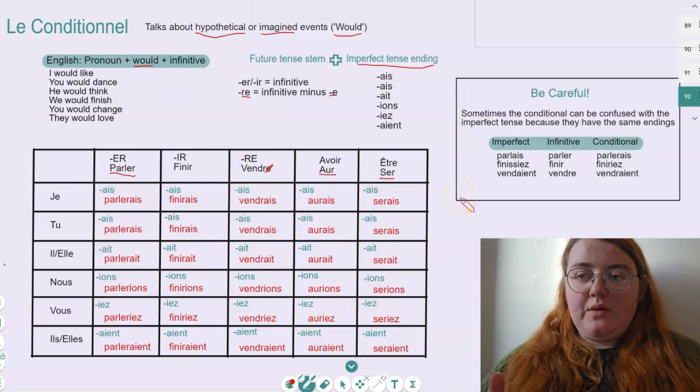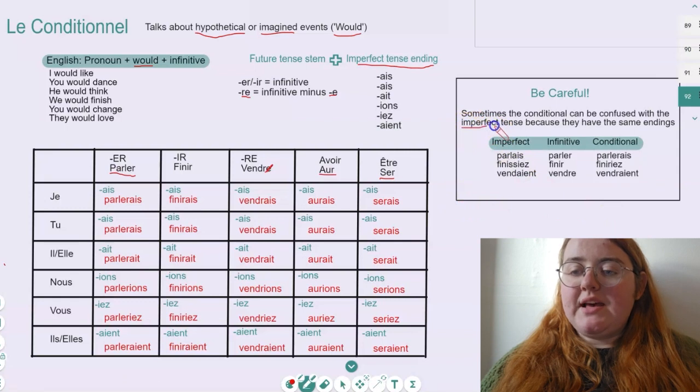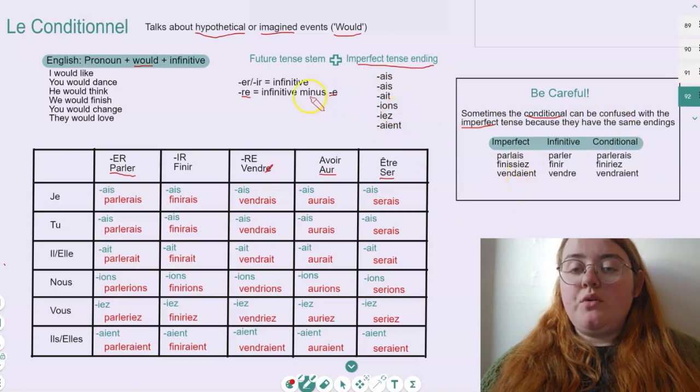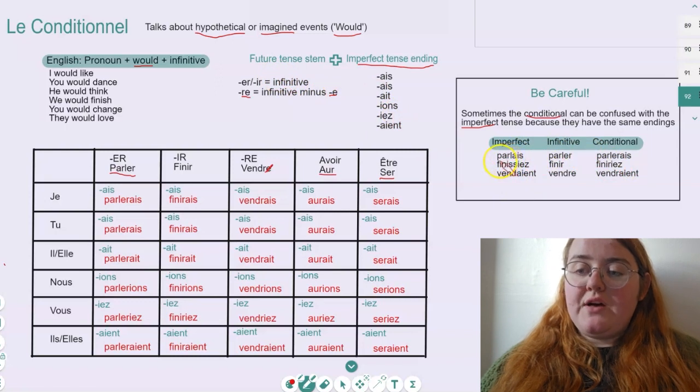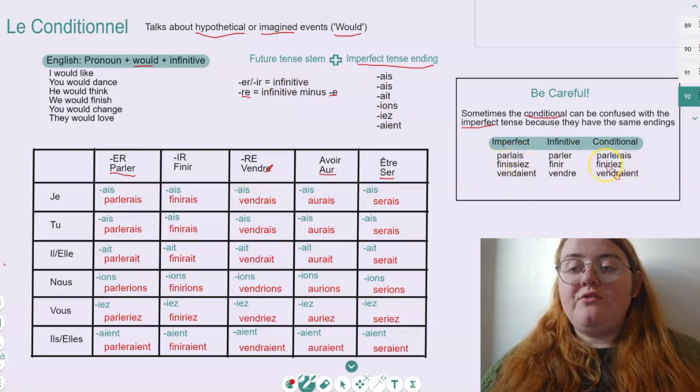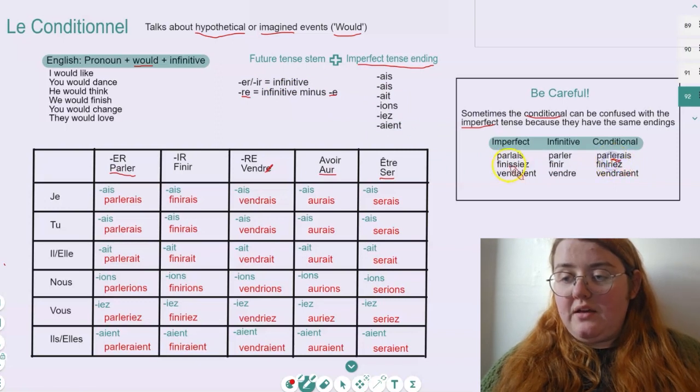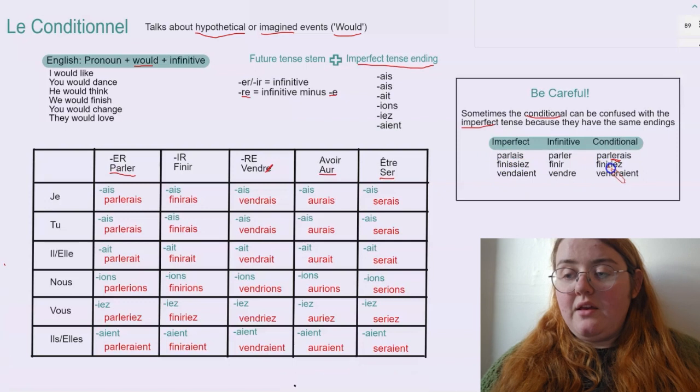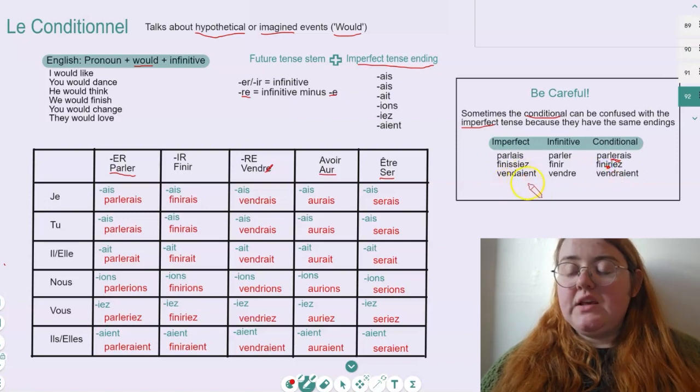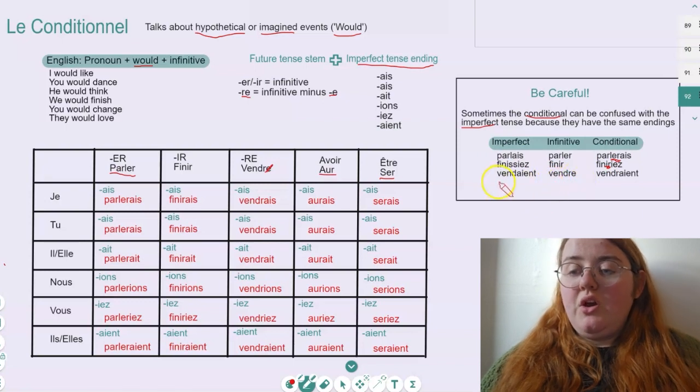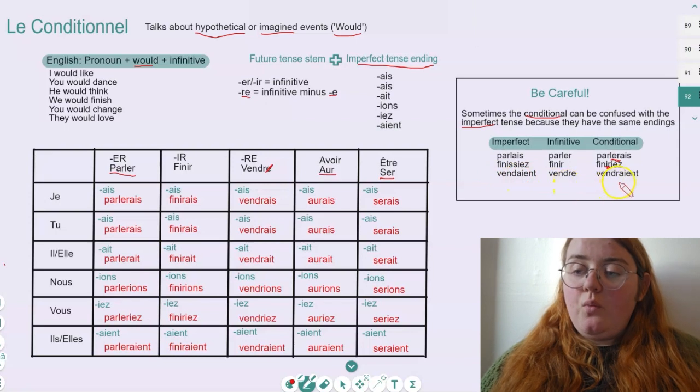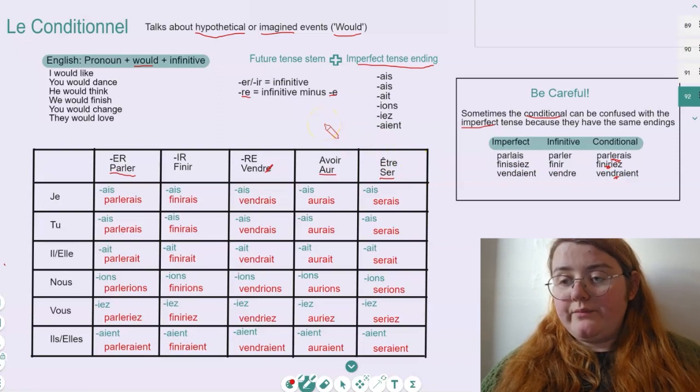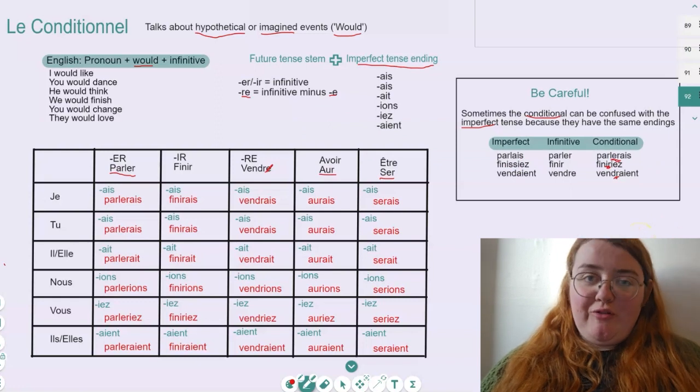So the very final thing I want to talk about is one thing we want to be super careful with - getting confused between the imperfect tense and the conditional tense. Even though these conjugations have the same ending, we want to remember that the stems will be different. So whereas for the imperfect we have parlais, the conditional we have parlerais. So we have this little infinitive ending in there. The same with IR verbs, we have finissais which then becomes finirais. And one that is super simple for our difference is the imperfect version of vendre. In the third person plural, is vendaient. Whereas in the conditional, we have this extra little R from the stem that becomes vendraient.